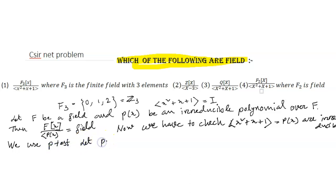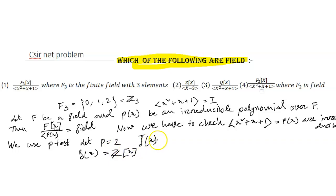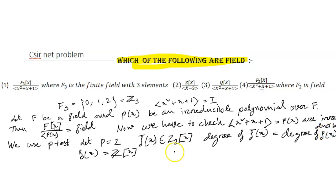For the p-test, let p = 2. We have f(x) in Z[x] and f̄(x) belongs to Z2[x]. The degree of f̄(x) equals the degree of f(x). So f̄(x) = x²+x+1, and f̄ mod 2 equals x²+x+1 in Z2[x].